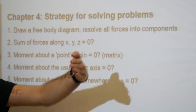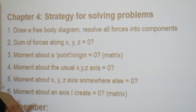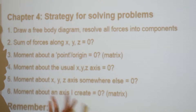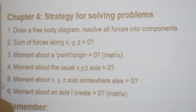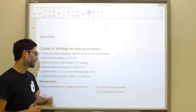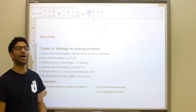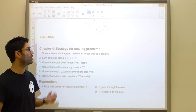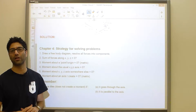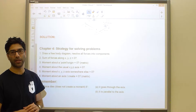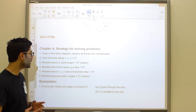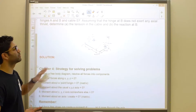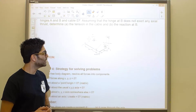If that fails, understand that you also have the authority to take the moment about the X axis but not the usual X axis — you're allowed to translate it anywhere you want, and you can do that with the Y or the Z. If that also fails, you have one last option: calculate the moment about an axis that you create using a matrix where the first row is a unit vector about your axis, the second row is a vector from where you're calculating the moment to where the force is applied, and the third row is your force.